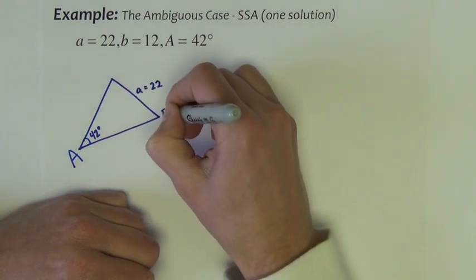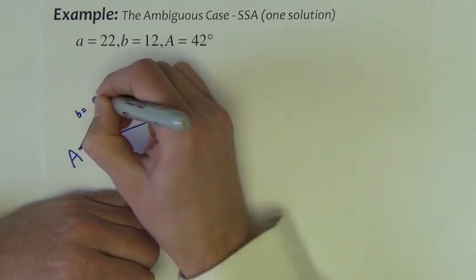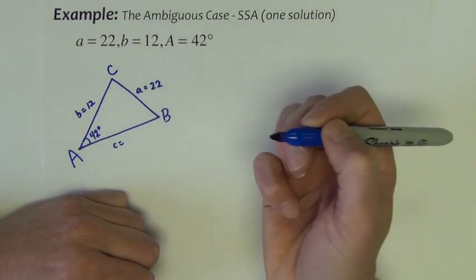We could call this angle B, so that means here's little b, this would then be angle C, here's side c.